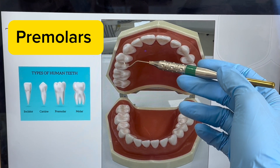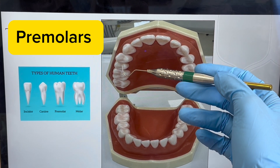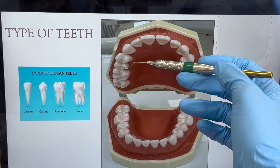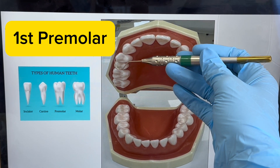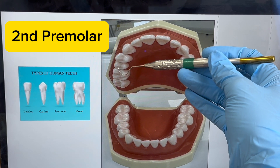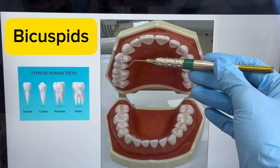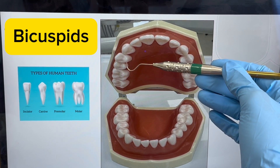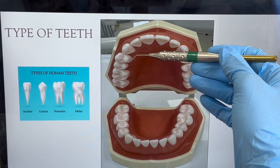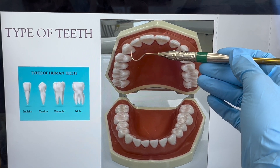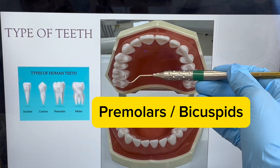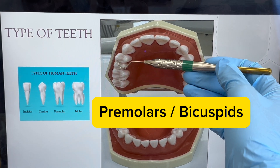Right next to the canine, we have the premolar — before the molars, we have premolars, and we have two of these. The first one right after the canine is called the first premolar, and the next one is called the second premolar. Some doctors call them bicuspids because they have a cusp on the buccal side and a cusp on the lingual side. The canine only has one cusp. Bi means two cuspids — so first premolar, second premolar.